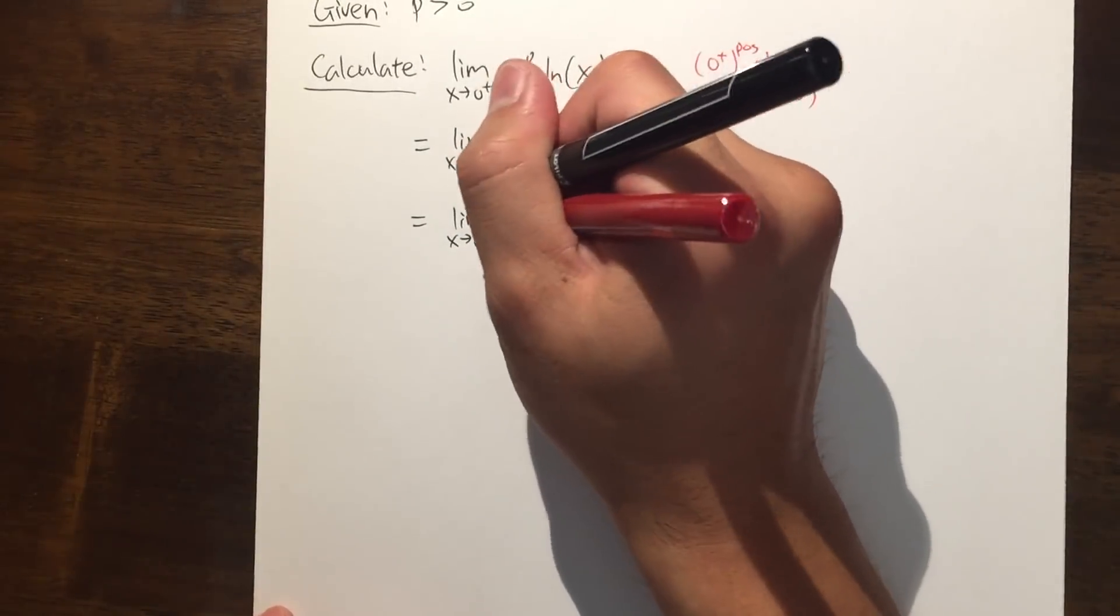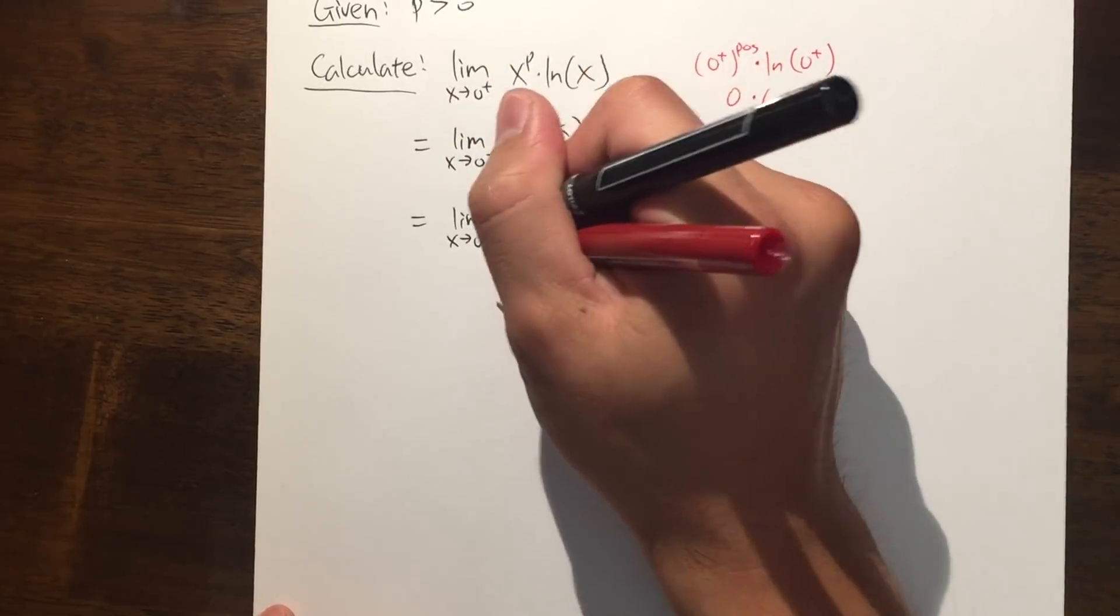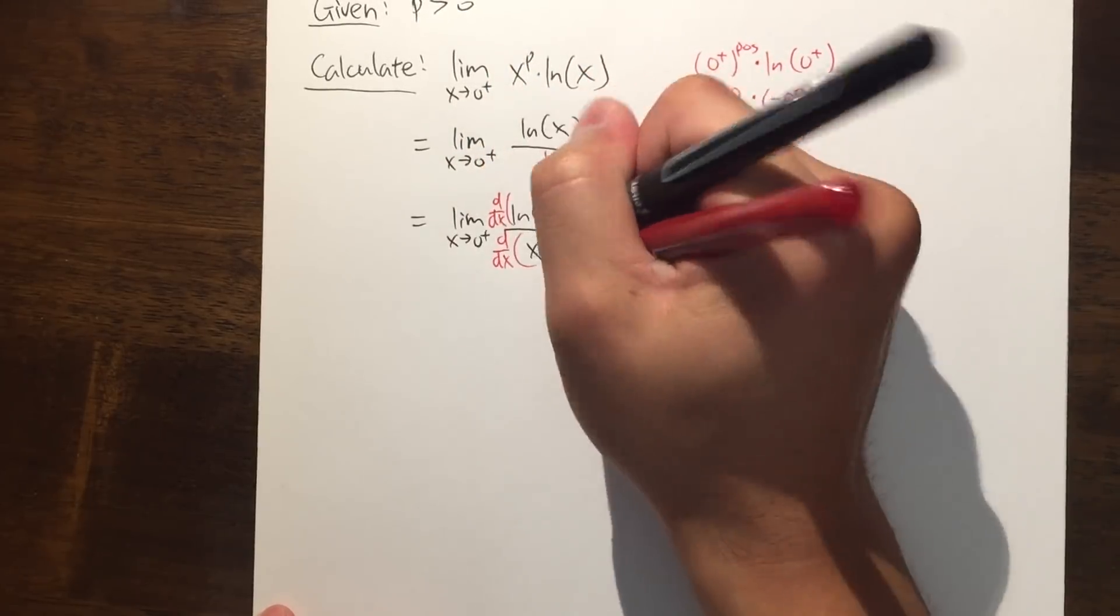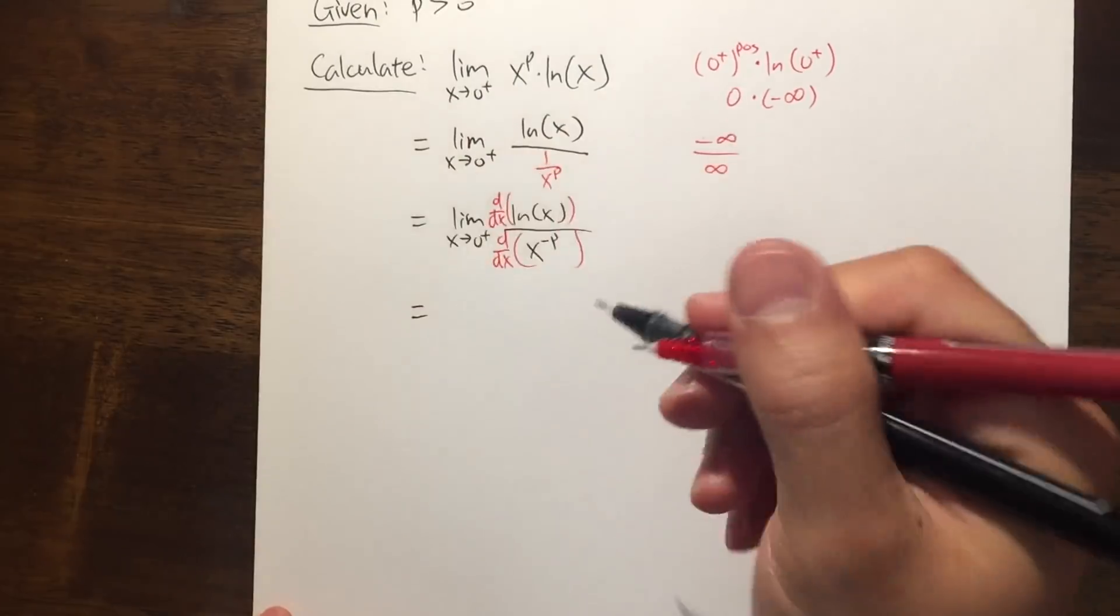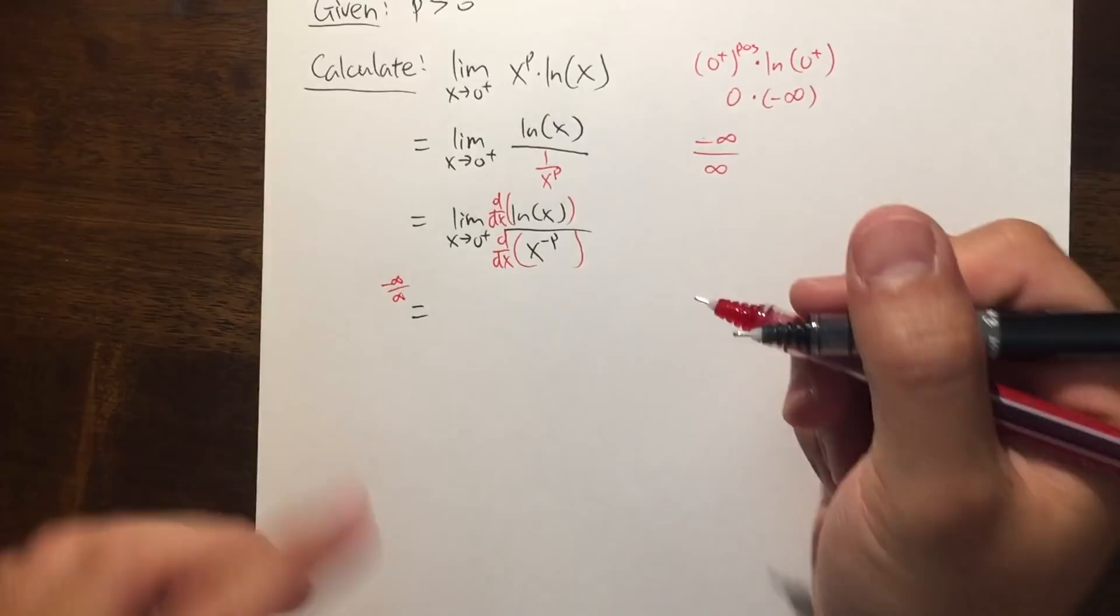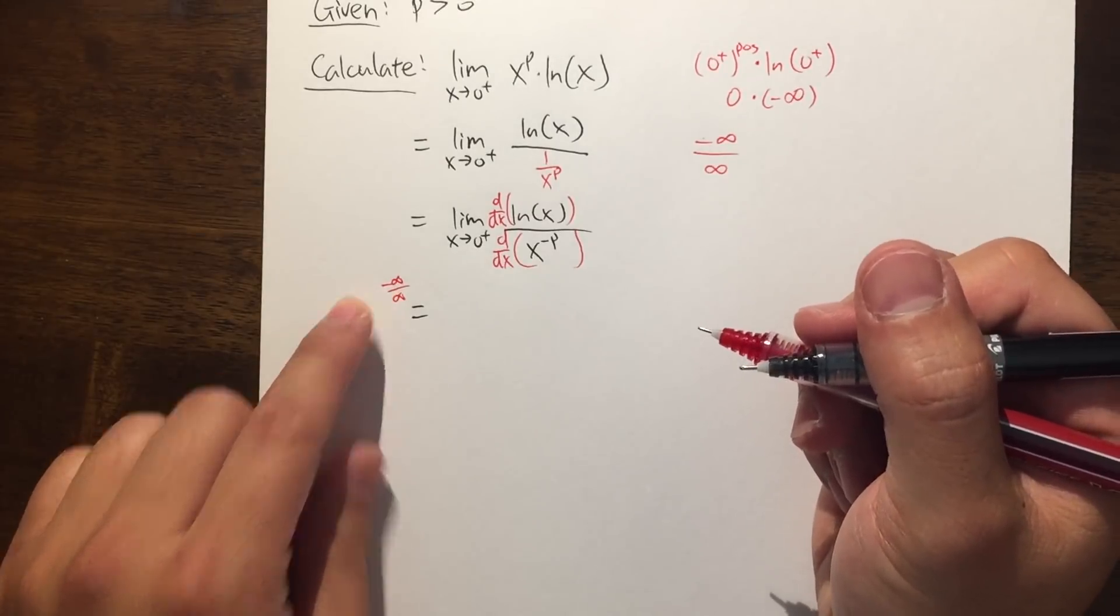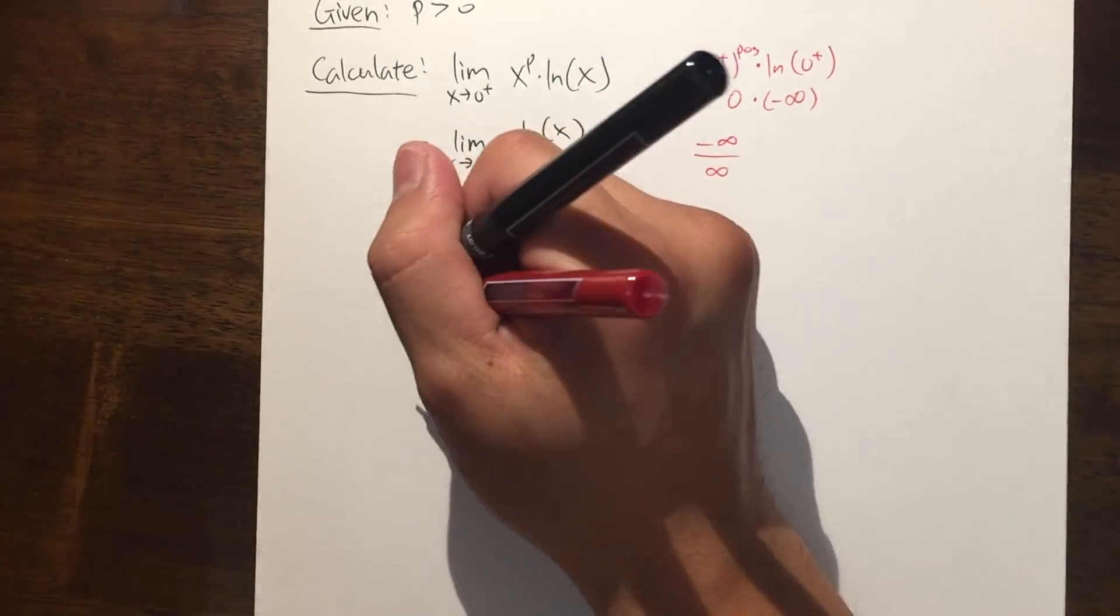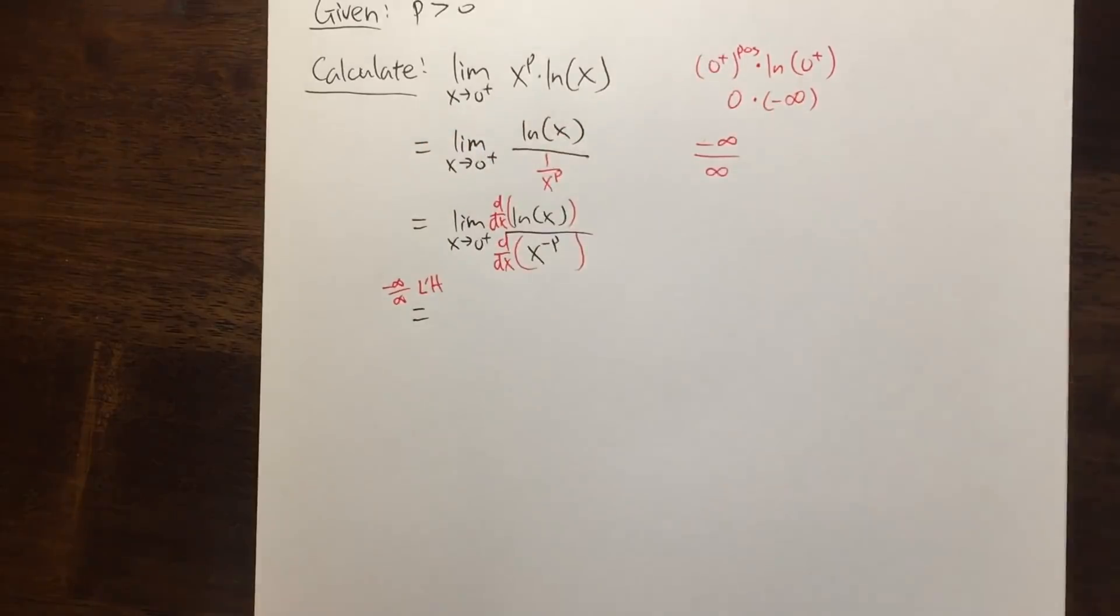And now we are ready. We are in business. Let's go ahead and differentiate the top and differentiate the bottom. This is because we have the negative infinity over infinity. Don't let the sign bother you. This is still indeterminate form and we can still use L'Hôpital's rule.